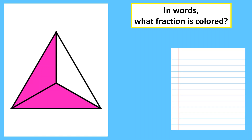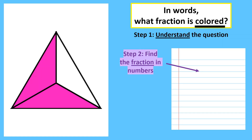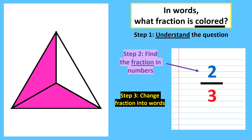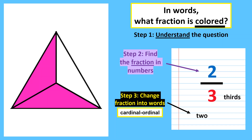Let's move on to the third example. In words, what fraction of this figure is colored? Step two: write the fraction in numbers. Step three: change this fraction into words — cardinal dash ordinal. The numerator is two, so just write two. The denominator is three, so you change it into thirds. Don't forget the S at the back because it's plural — there is more than one third. Don't forget the dash as well.